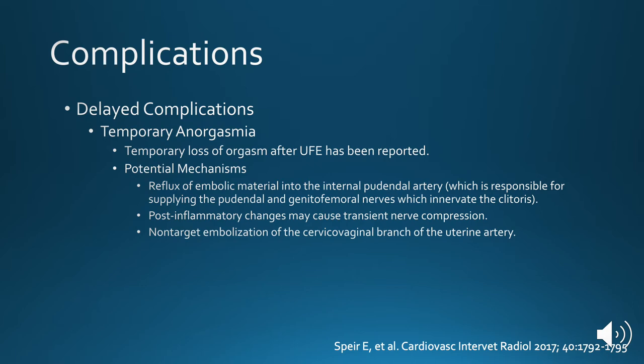There are several potential mechanisms for this. First, you can have reflux of embolic material into the internal pudendal artery, and this is responsible for supplying the pudendal and genital femoral nerves. Post-inflammatory changes can cause transient nerve compression, and finally, non-target embolization can occur in the cervical-vaginal branch of the uterine artery, which is why I highlighted that in my technique lecture.